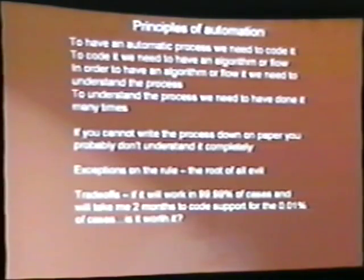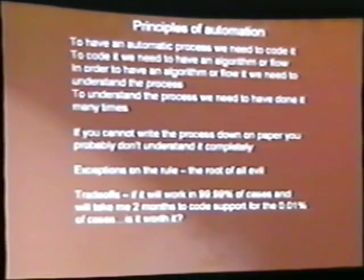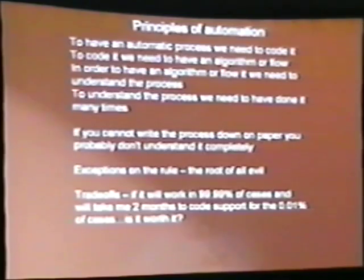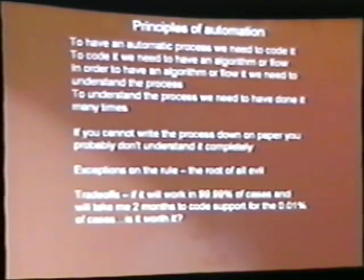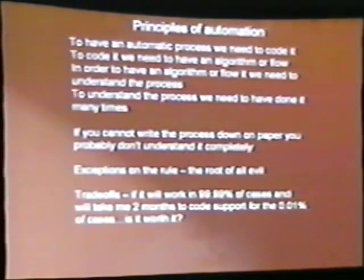Where does this whole thing fall apart? It falls apart with exceptions. Exceptions within a process are always the root of all evil — you get situations where something works like this except when x equals five, because then you have to apply a whole new set of rules. That's what bites you when you want to automate something. The parts that have exceptions are the parts that are really difficult to automate. However, we can say: if it works 99.99% of the time and it's going to take three months to code that exception, we'll live with it.